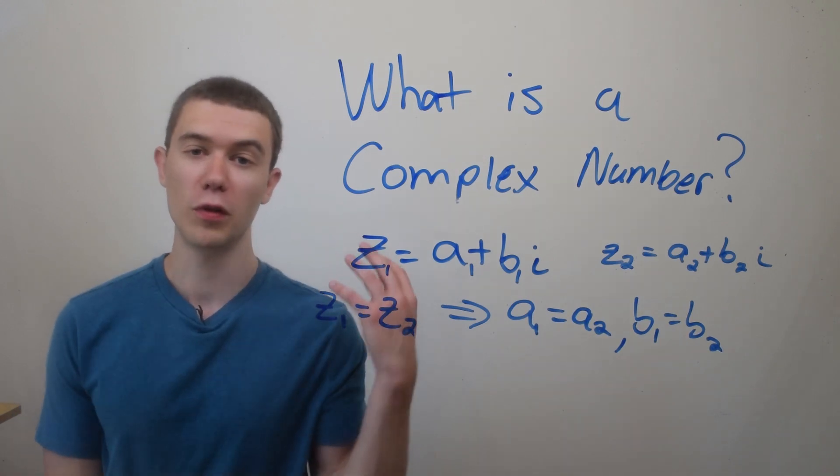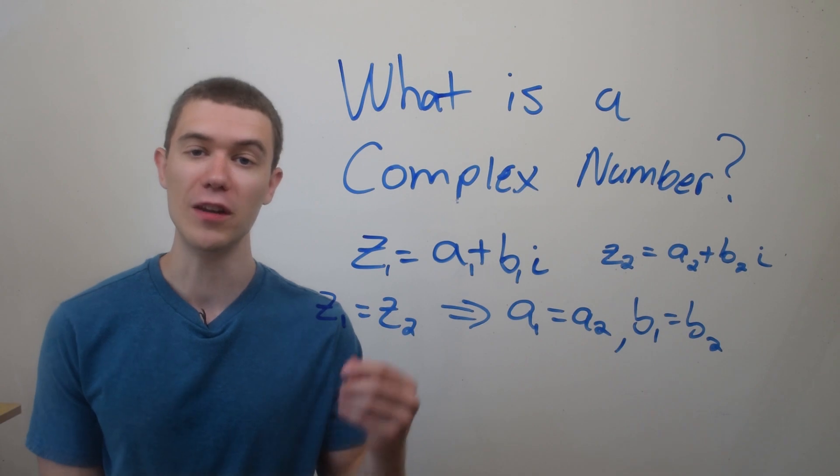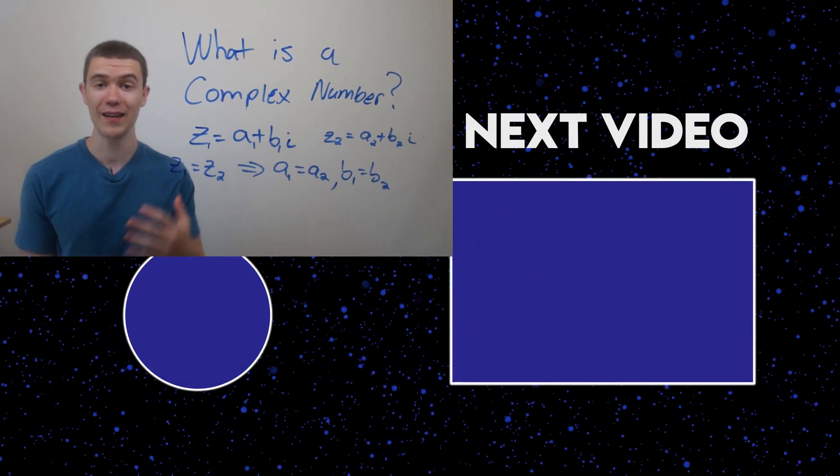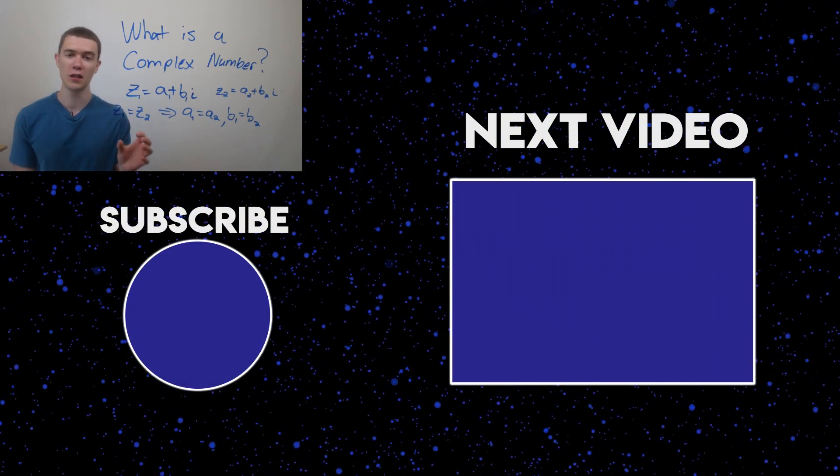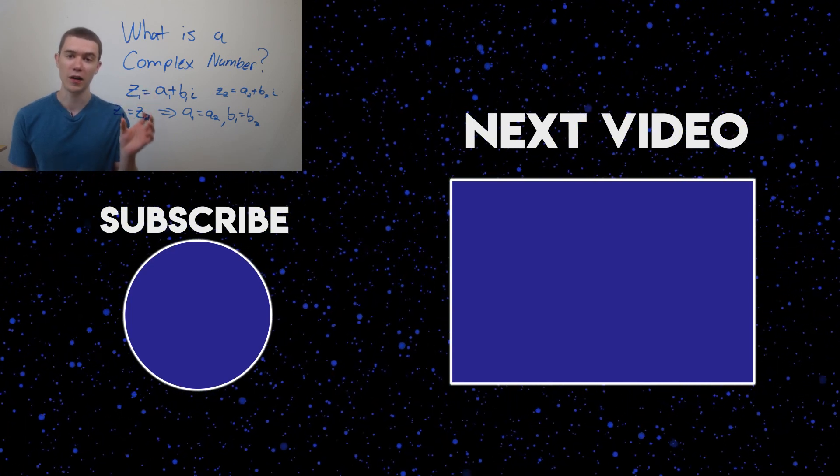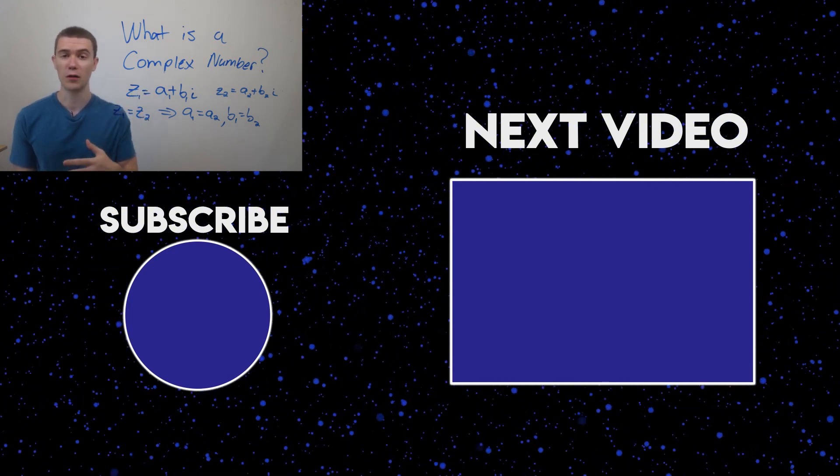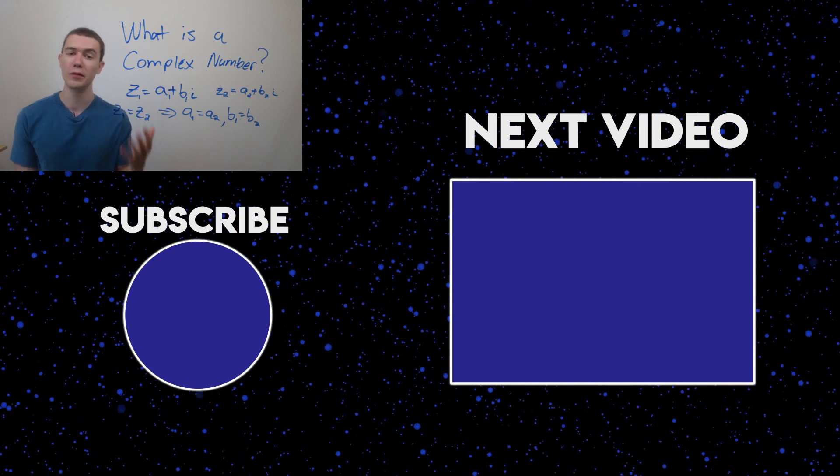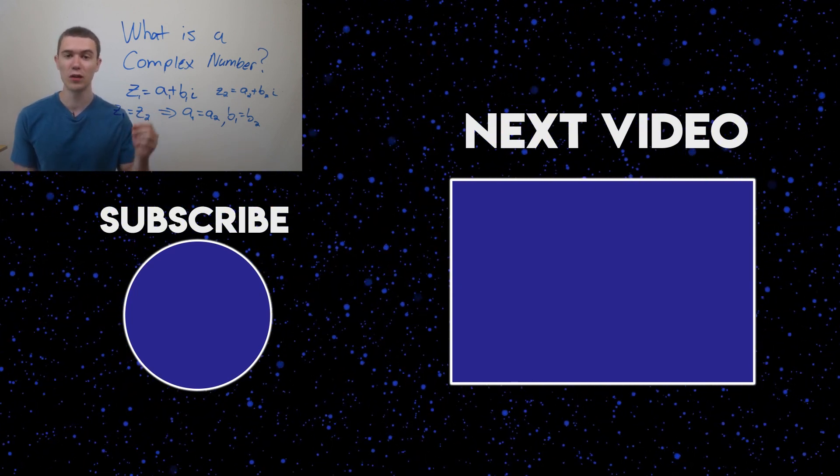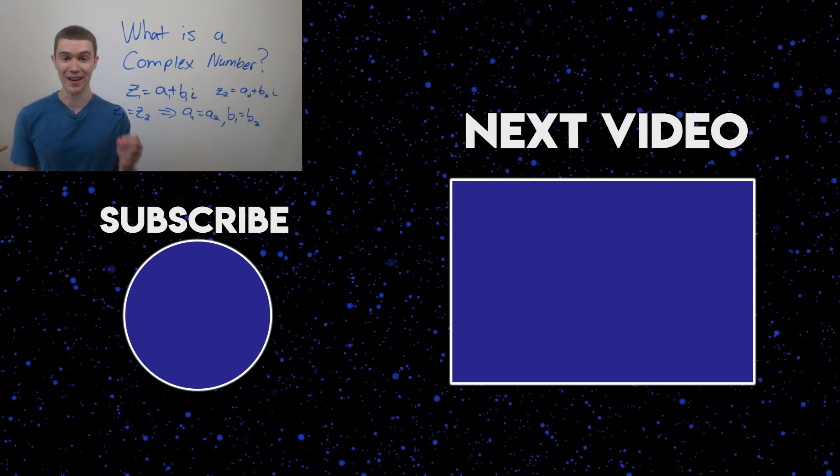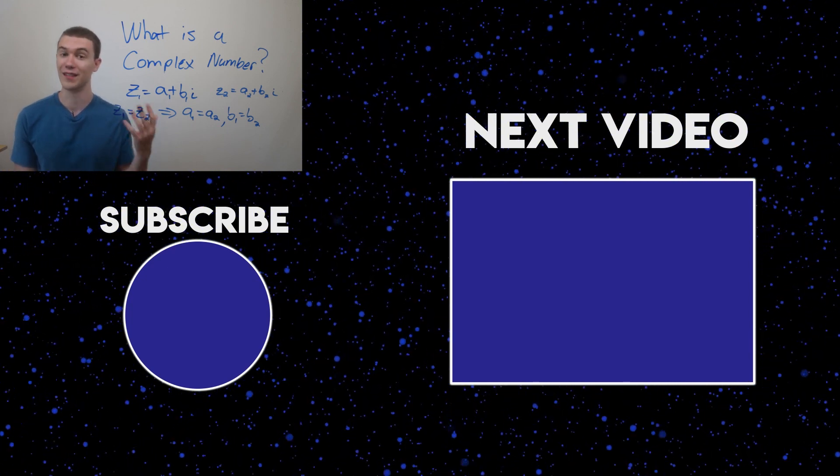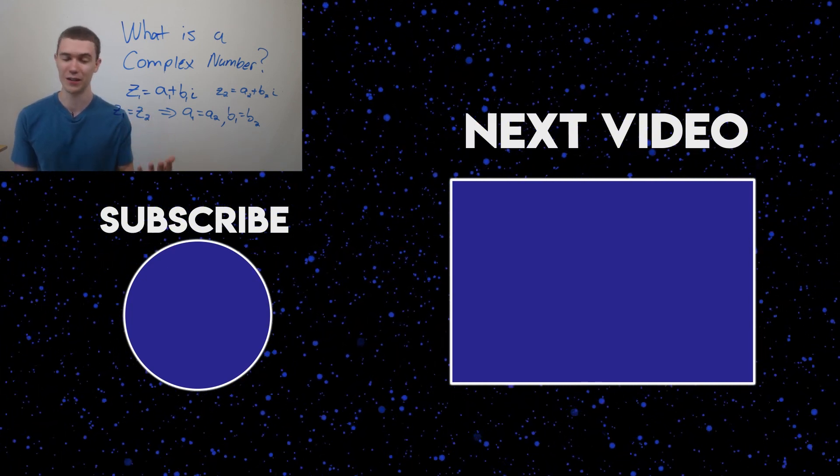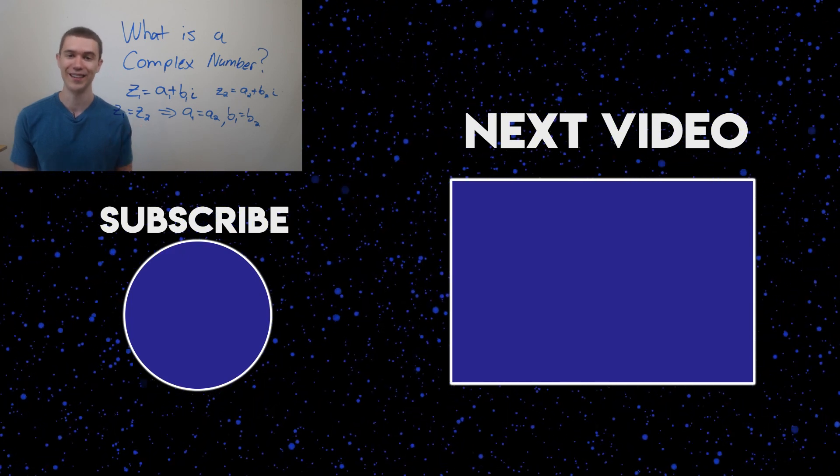In this video you learned what a complex number is. We introduced the imaginary unit i and where it comes from, and talked about equality of complex numbers. Next time we'll discuss arithmetic operations on complex numbers like addition, subtraction, multiplication, and division. Thanks for watching.